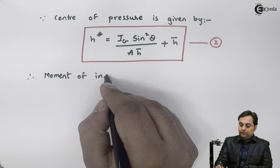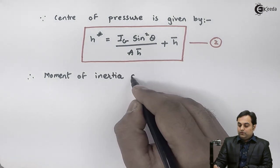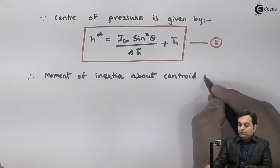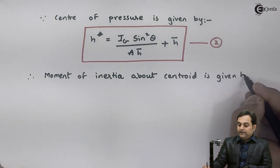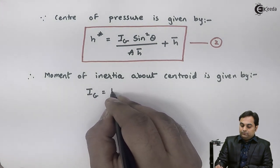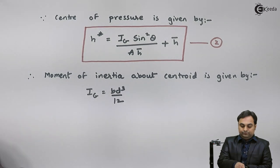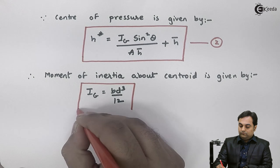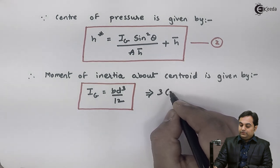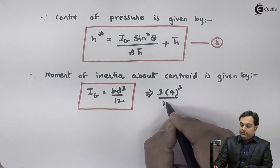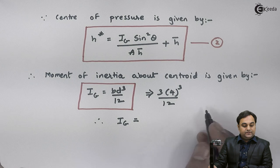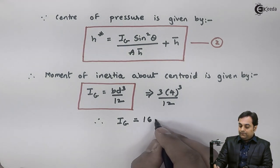The moment of inertia about the centroid for a rectangular plane surface is given by I_G = bd³/12. Putting the values, b is 3 and d is 4: I_G = 3 × 4³/12 = 16 m⁴.